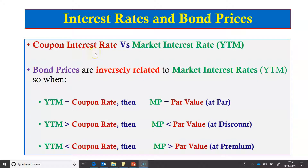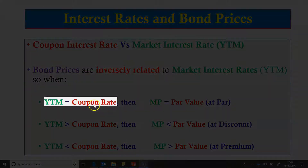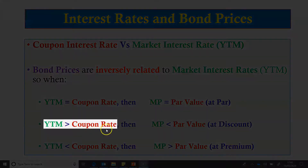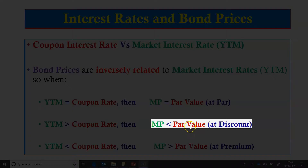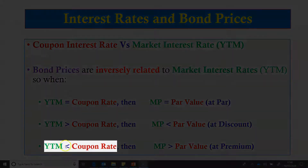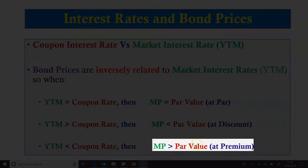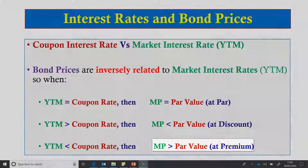Remember, coupon interest rate remains fixed, as this is the rate that is used to calculate the periodic interest on the bond. We also concluded the following three: when YTM is equal to coupon rate, the market price will be equal to par value and the bond is selling at par. When YTM is greater than coupon rate, the market price will be less than par value and the bond will sell at a discount from par value. When YTM is less than the coupon rate, the market price will be greater than par value and the bond will be selling at a premium to par value.